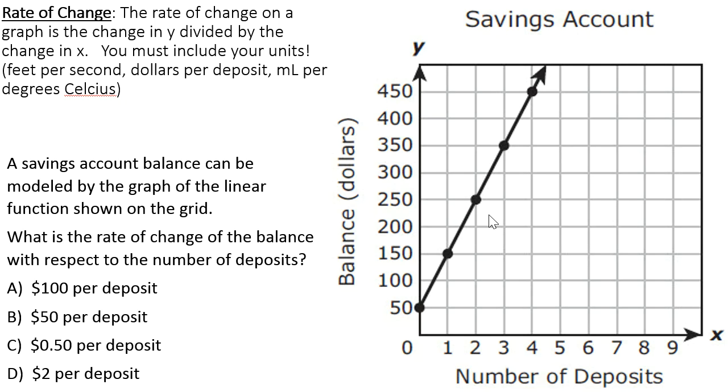So here's our first example. We're going to find the rate of change, and so the situation says a savings account balance can be modeled by the graph of a linear function shown on the grid. What is the rate of change? So that's going to be our first most important word, rate of change of the balance with respect to the number of deposits.